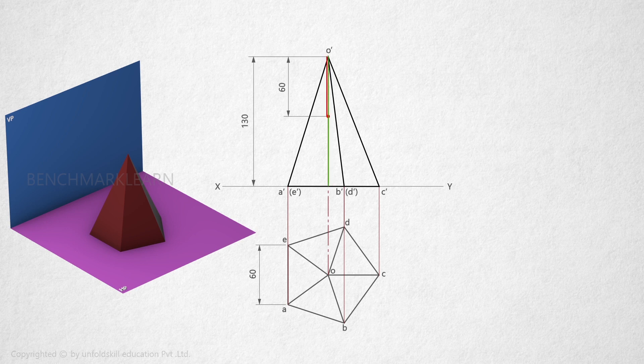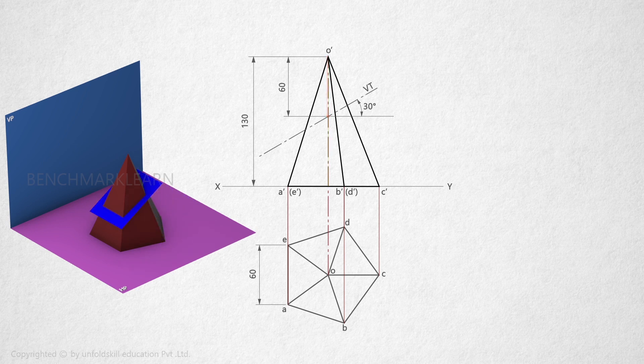Now take a plane perpendicular to VP and inclined 30 degrees to HP. Cut the pyramid using this plane and remove the upper portion.